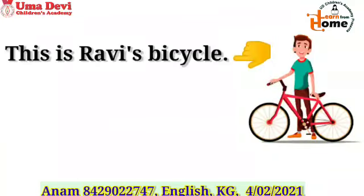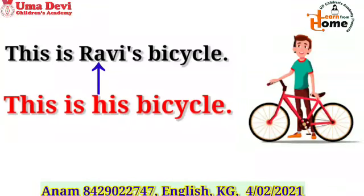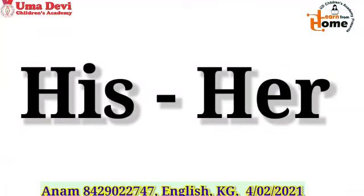Read this sentence: 'This is Rabi's bicycle.' Whose bicycle is this? Rabi's. So for Rabi, what will you use — his or her? His. Very good. So in place of Rabi you will use 'his': this is his bicycle. I hope you all have understood where to use 'his' and 'her.'